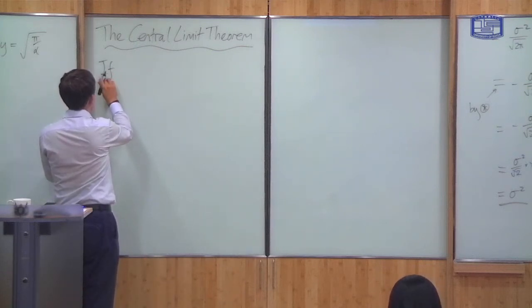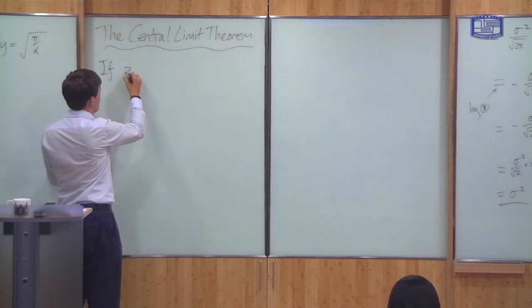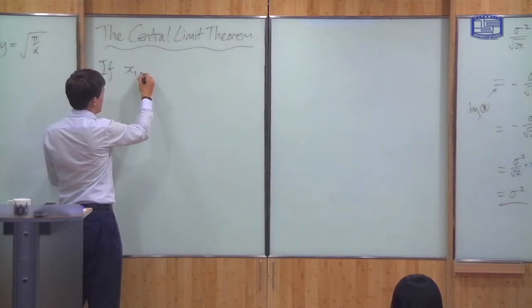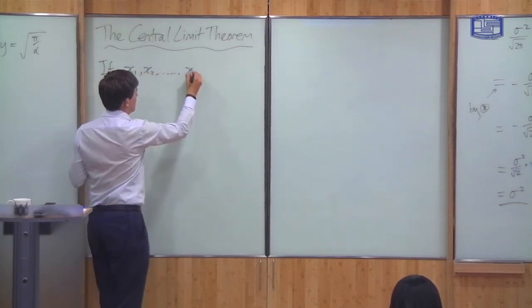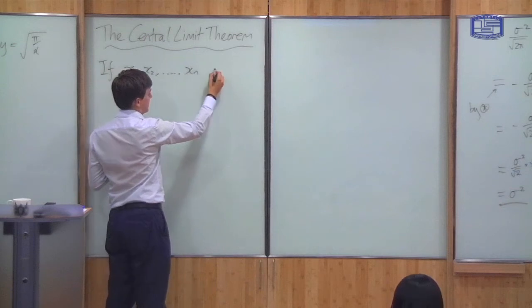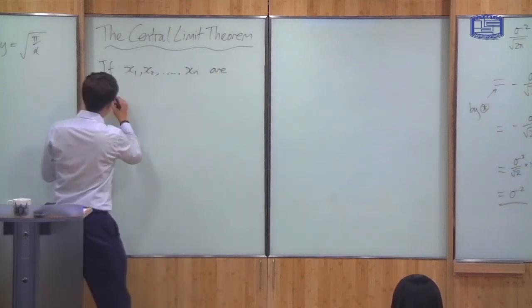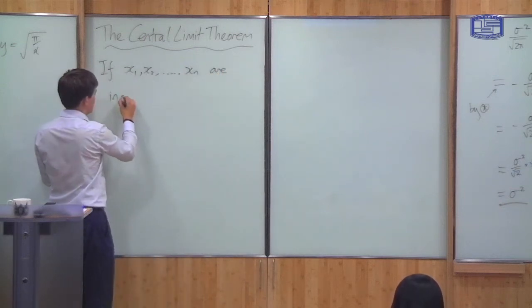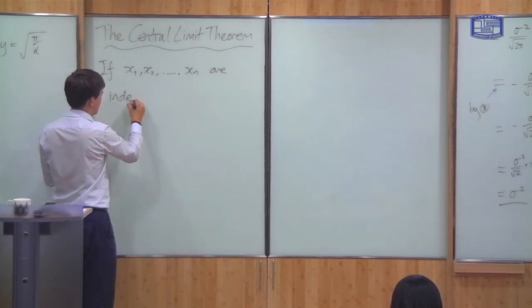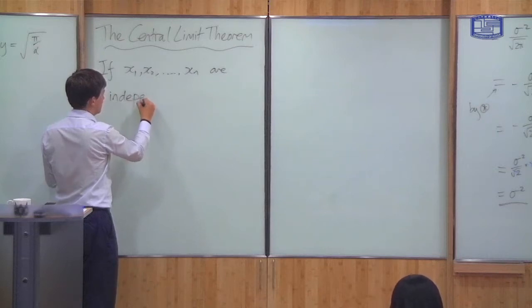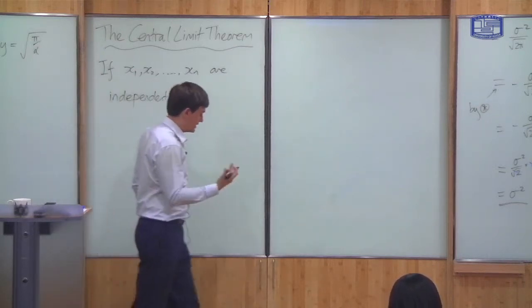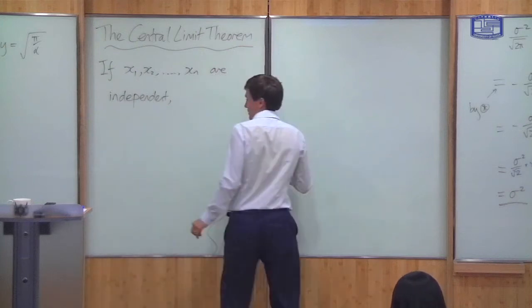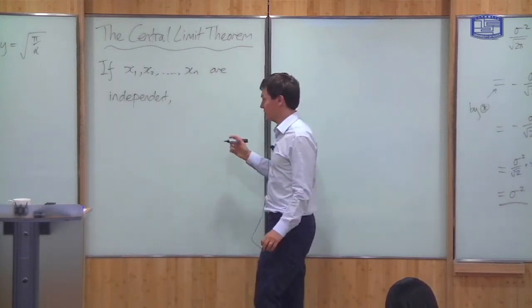The central limit theorem says the following. If I've got a number of variables x1, x2, up to xn, which are independent in the sense I defined at the start of this class, and they're also identically distributed — that means they have the same probability distribution.